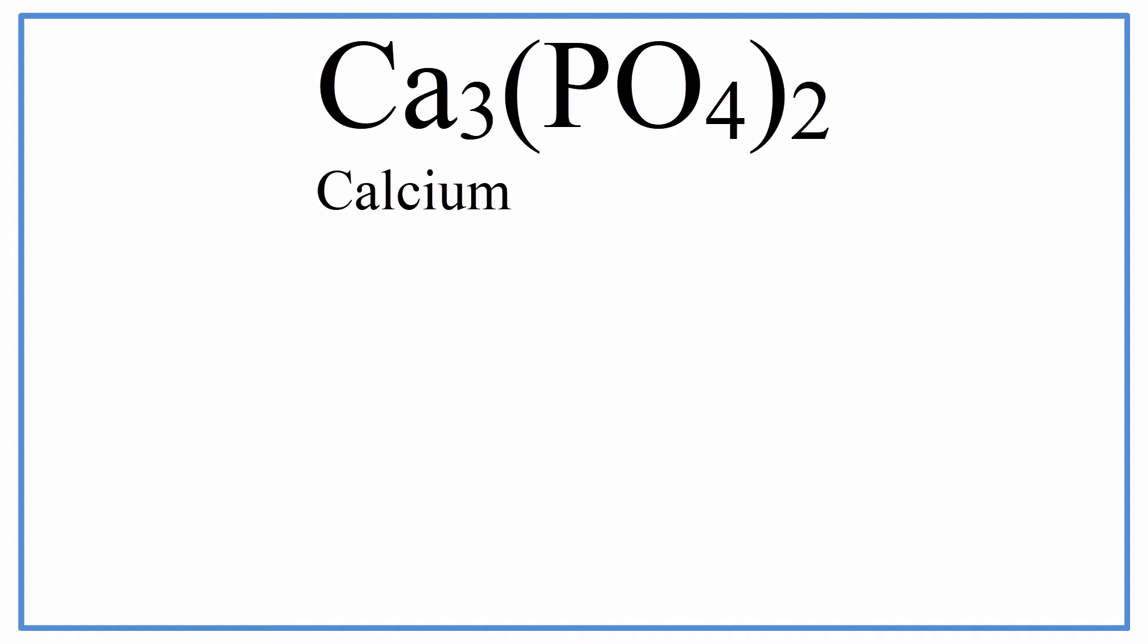So we have our calcium already named, and we just looked up the PO4 that's called phosphate. So the name of this compound, the Ca3(PO4)2, is calcium phosphate.